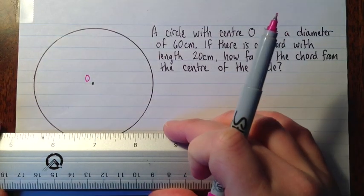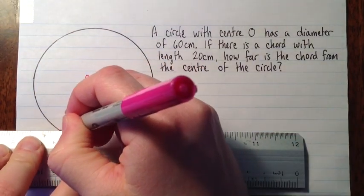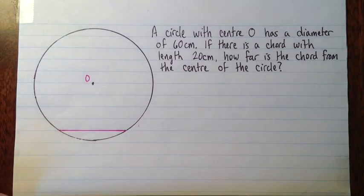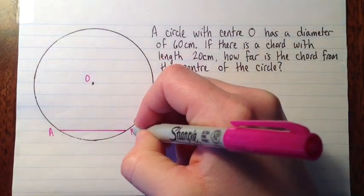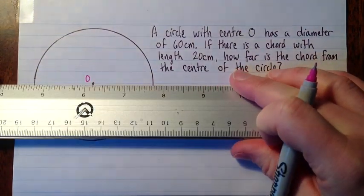So I'll draw some things in here. Put the chord here. And you can put the chord anywhere. And that's 20 centimeters. I'll call that AB, because we'll probably have to refer to that. And we know that the diameter is 60 centimeters.